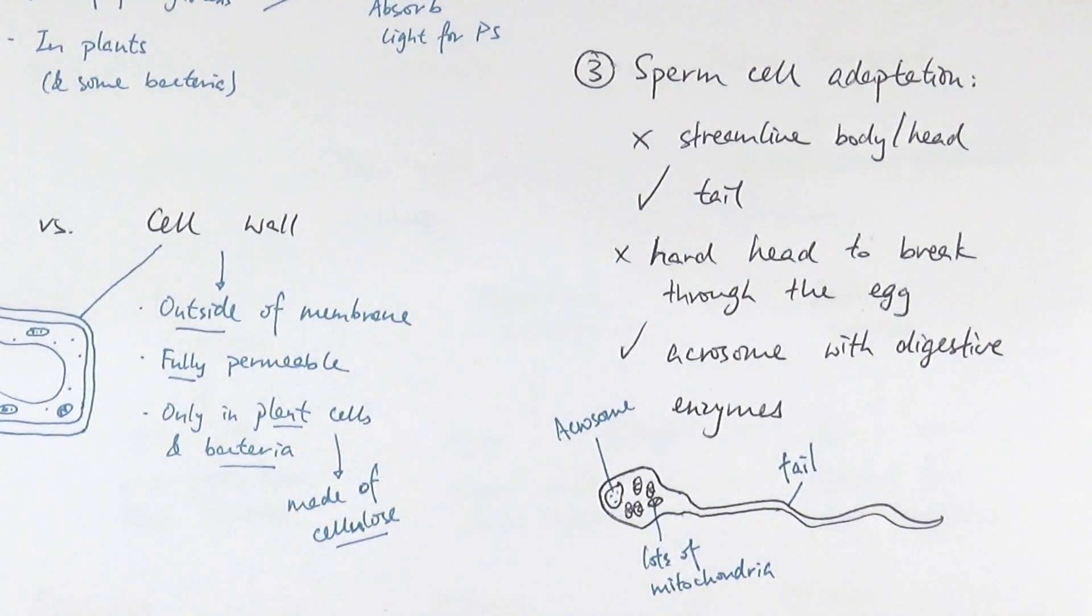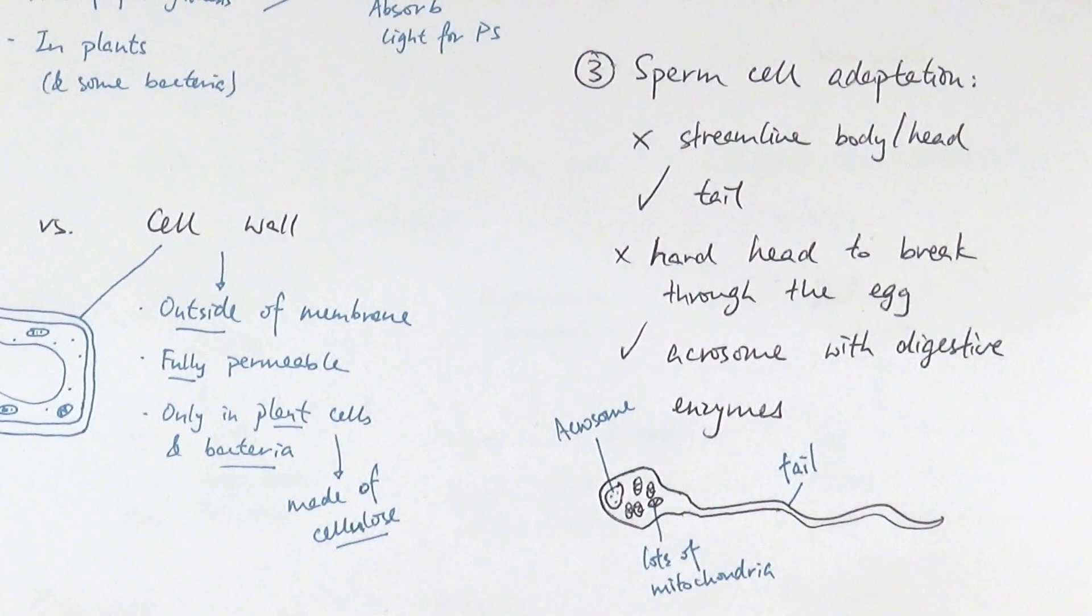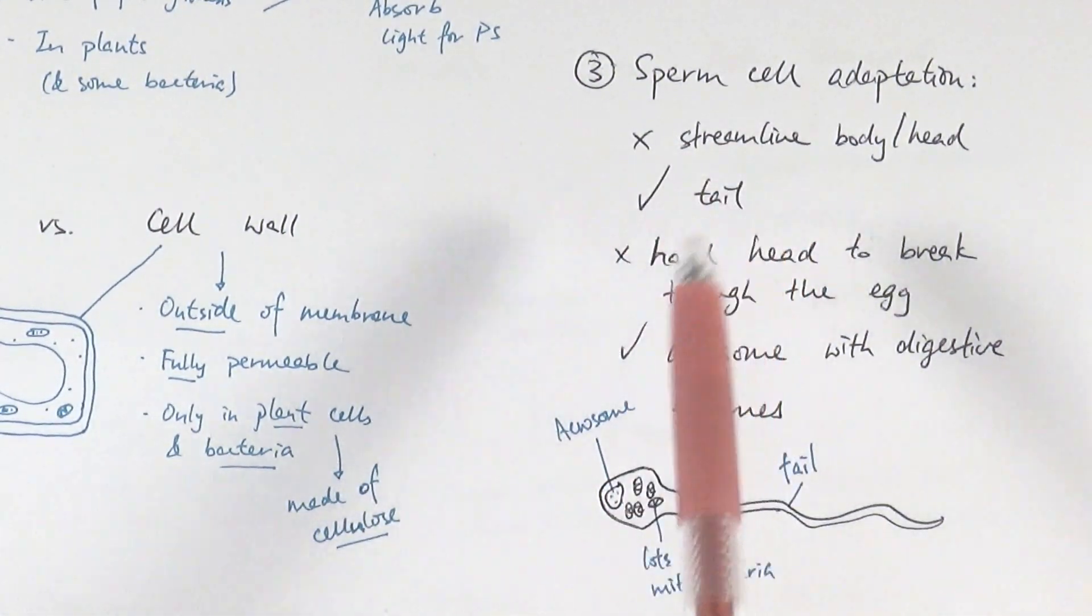A third mistake or misconception that people have is about the sperm cell's adaptation. Often people like to say it's got a streamlined body or a streamlined head. That is not an acceptable answer in the mark scheme in most exam papers, so please avoid saying streamlined body or head. If you want to say about how it can help it swim, then use the fact that they have a tail. That would suffice.